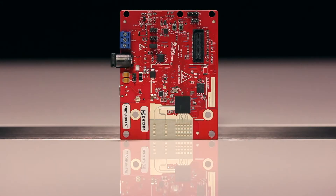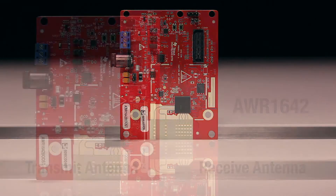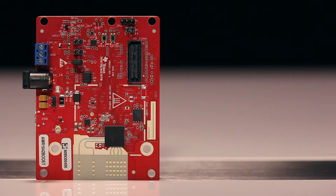In this demo, we are going to demonstrate use of the AWR1642 single-chip millimeter wave sensor with DSP for vehicle occupancy detection. It is a contactless and non-intrusive way of sensing which is accurate and works in any environmental condition.